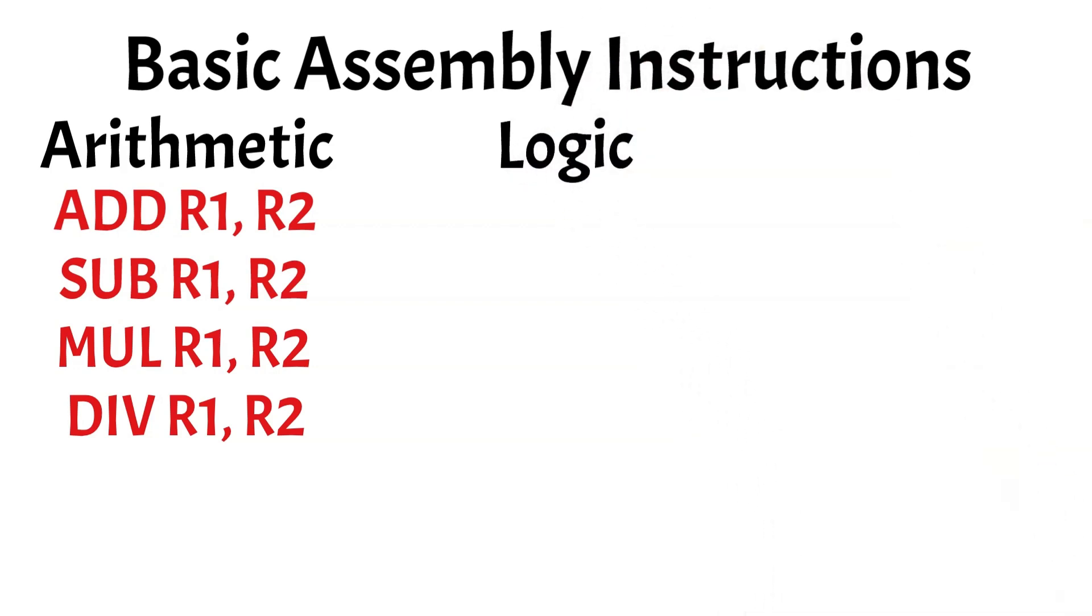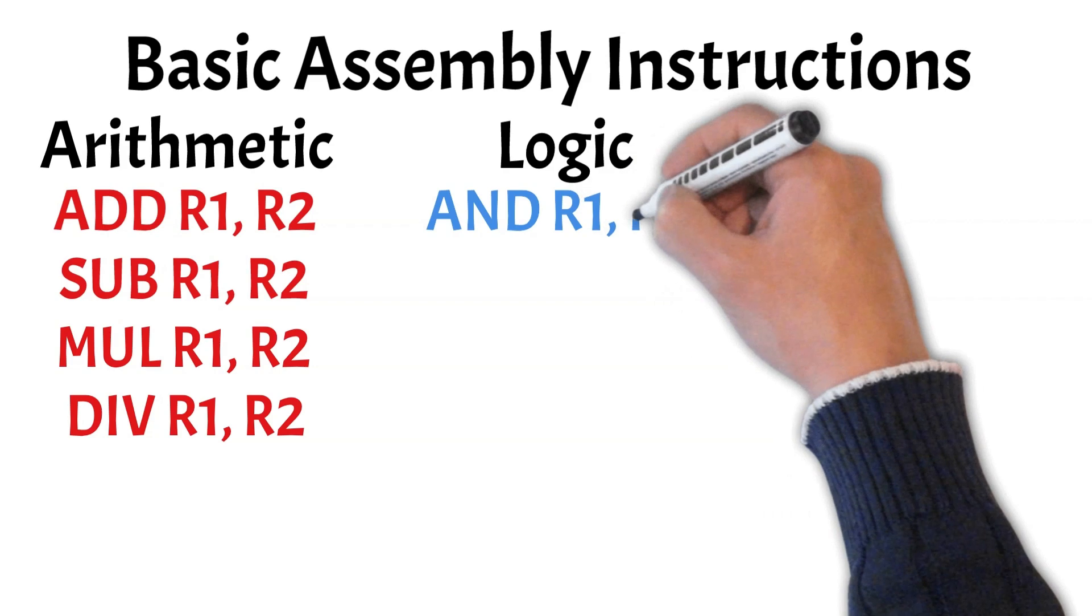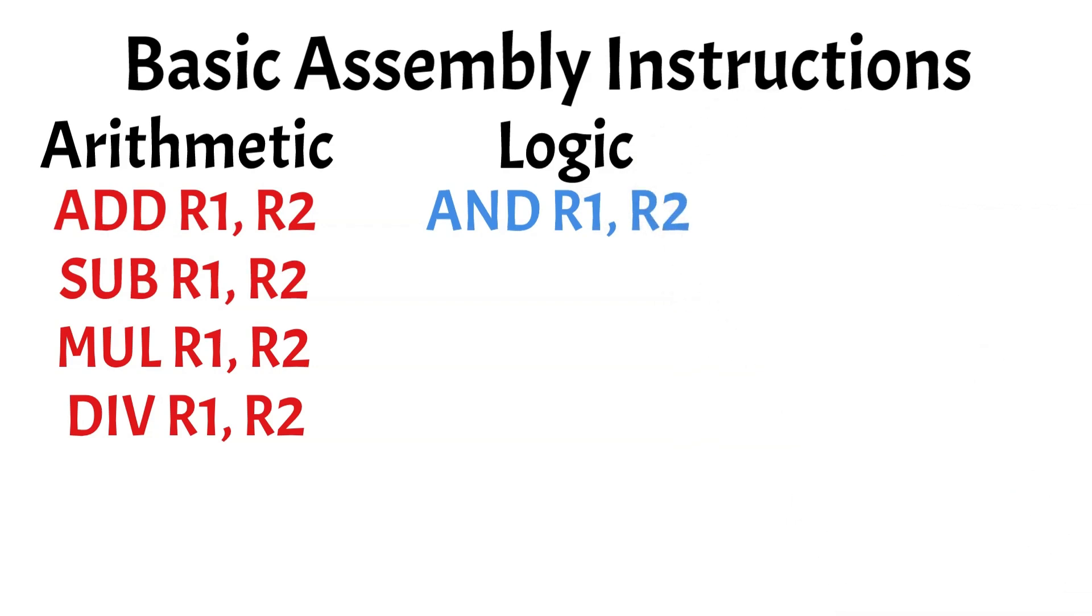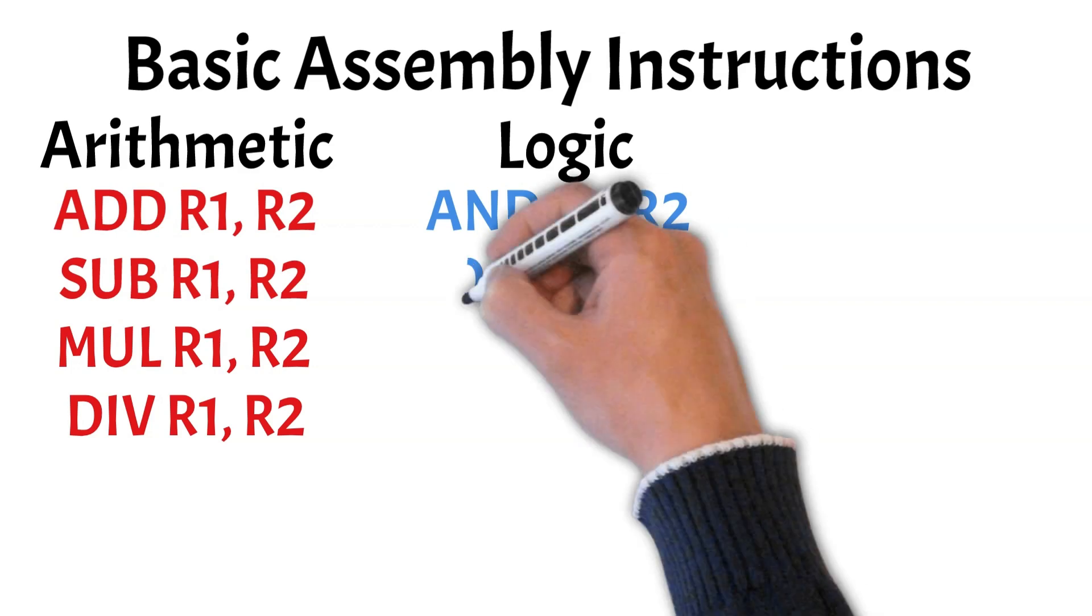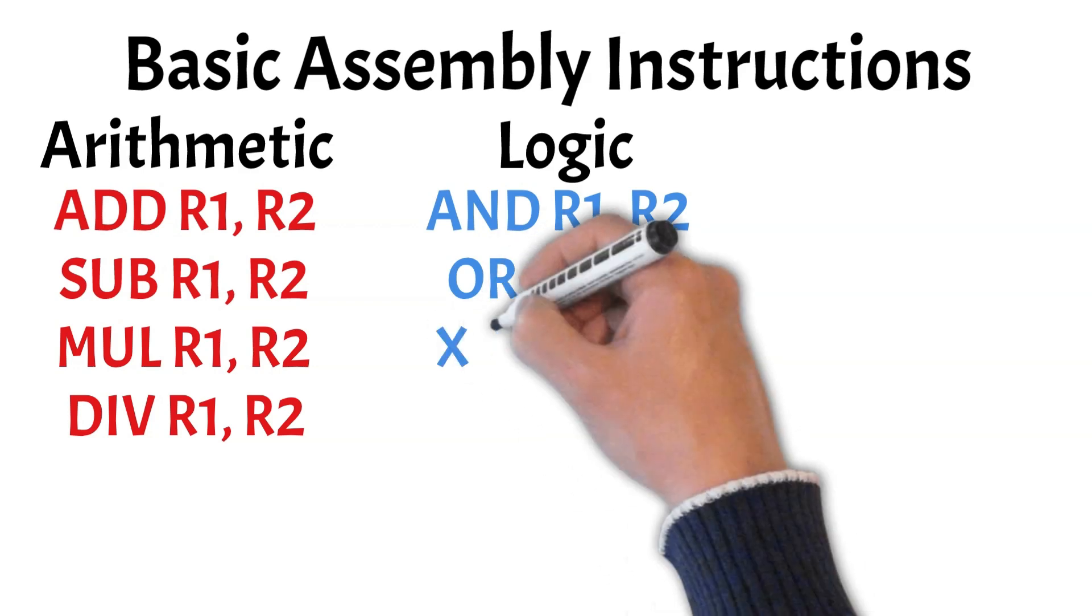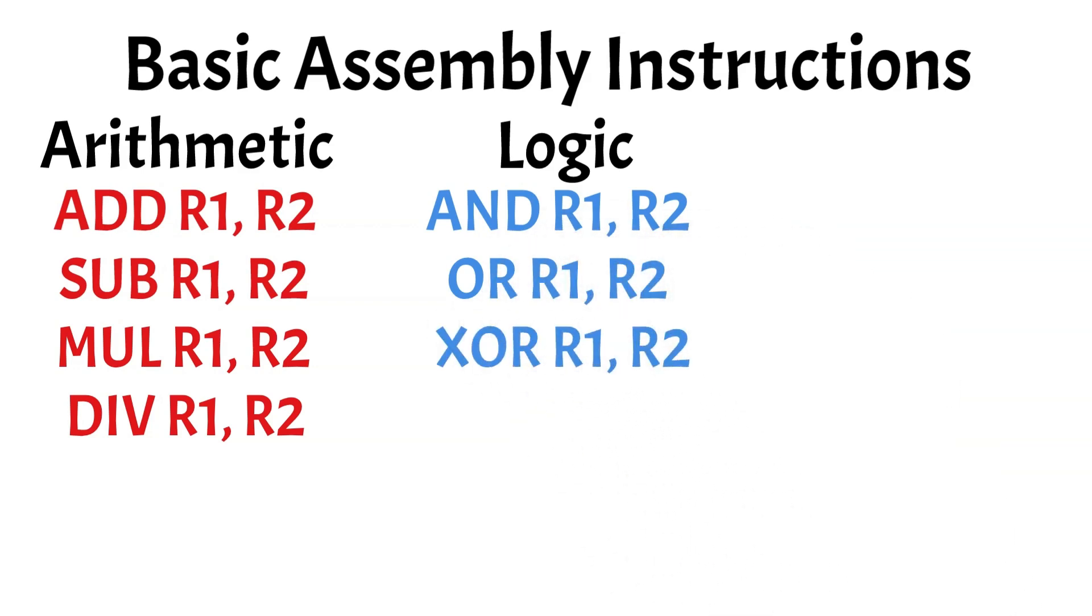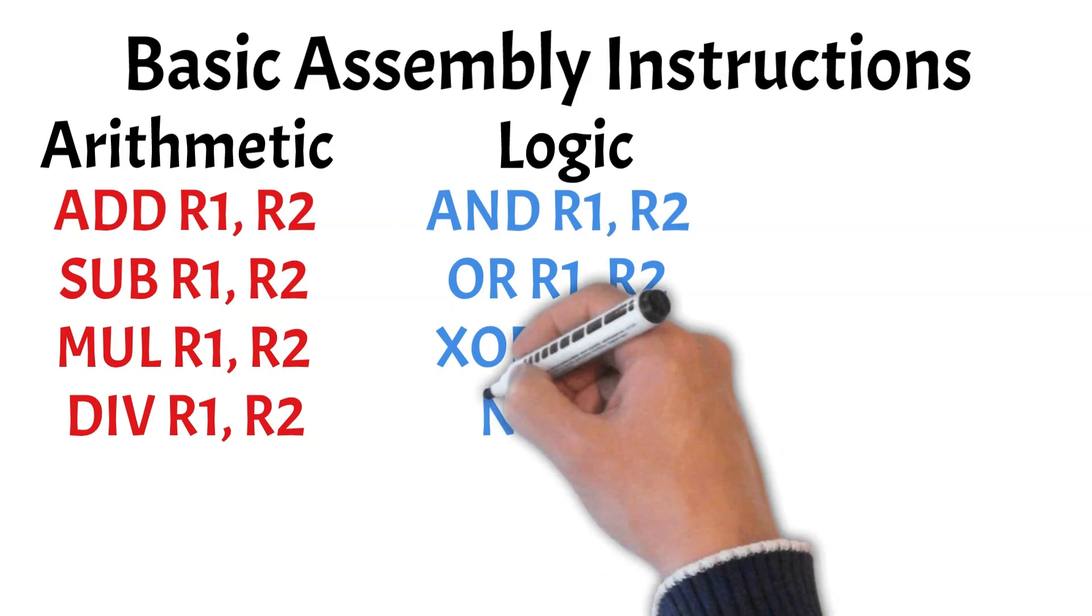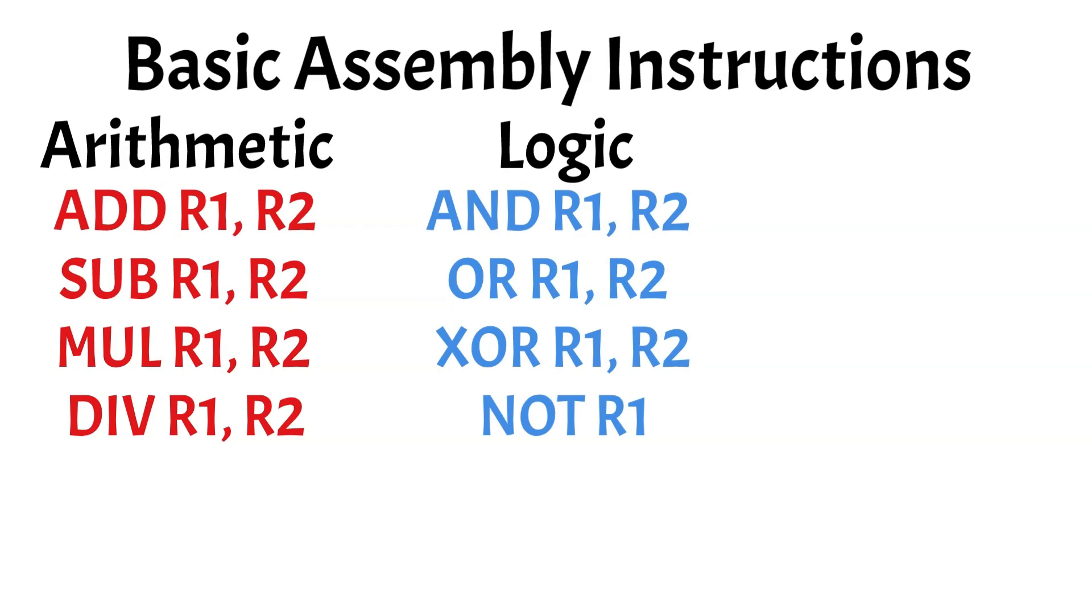Logic instructions handle bitwise operations. AND R1, R2 performs a bitwise AND, where only bits that are 1 in both R1 and R2 remain 1. OR R1, R2 performs a bitwise OR, setting bits to 1 if either register has a 1. Exclusive OR R1, R2 performs an exclusive OR, resulting in 1 if the bits differ. The NOT instruction alternates the bits in a register, changing 1s to 0s, and vice versa.